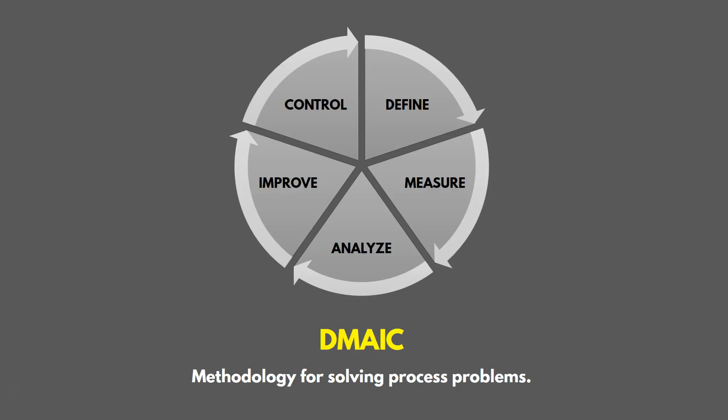The methodology we use on Lean Six Sigma projects is called the DMAIC cycle — it's how we solve process problems. There are five phases: Define (define the process and issues we're trying to address), Measure (measure the existing process and gather data), Analyze (analyze data for improvement opportunities), Improve (improve the process), and Control (control it over time so those positive changes last for the long term).